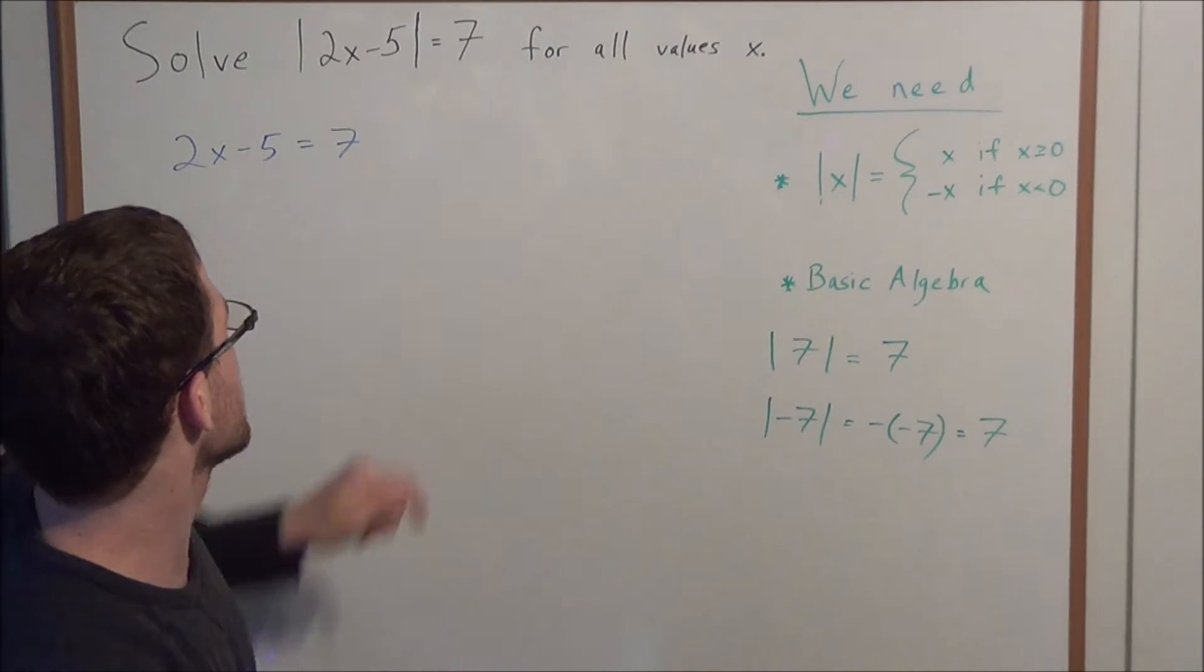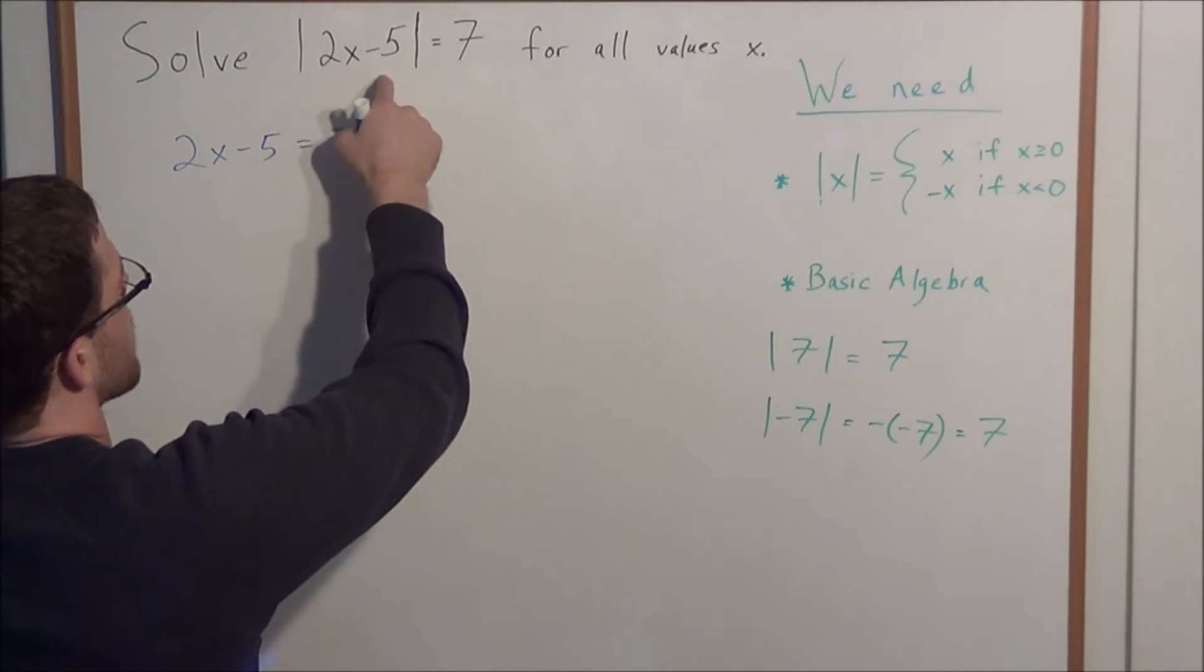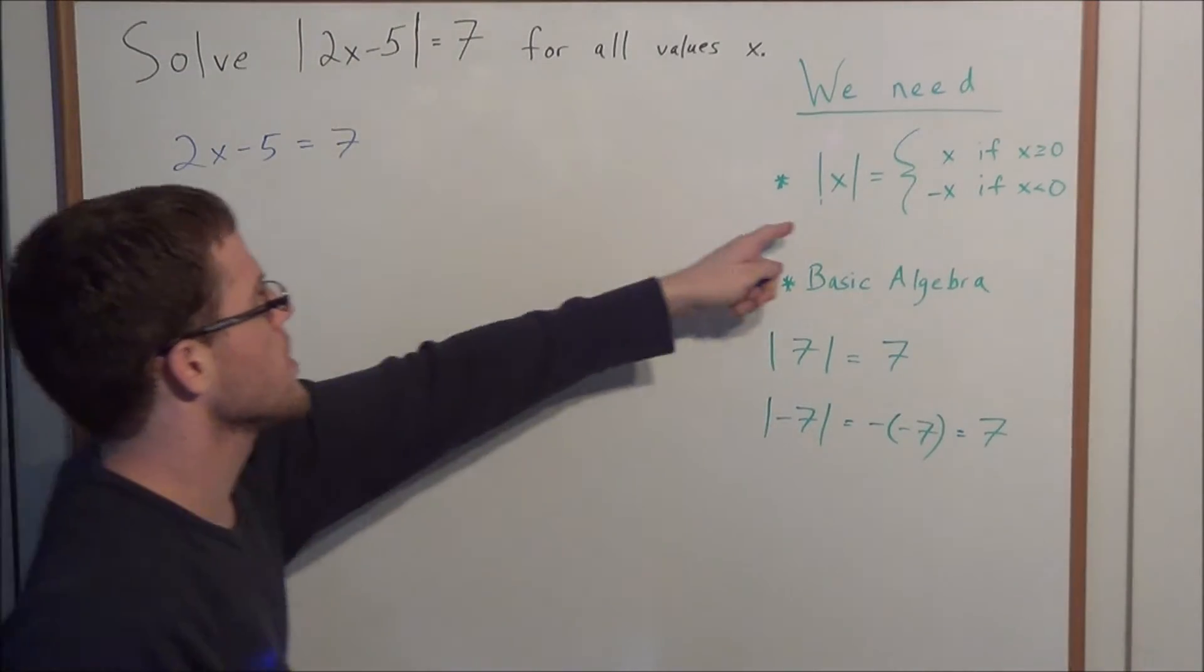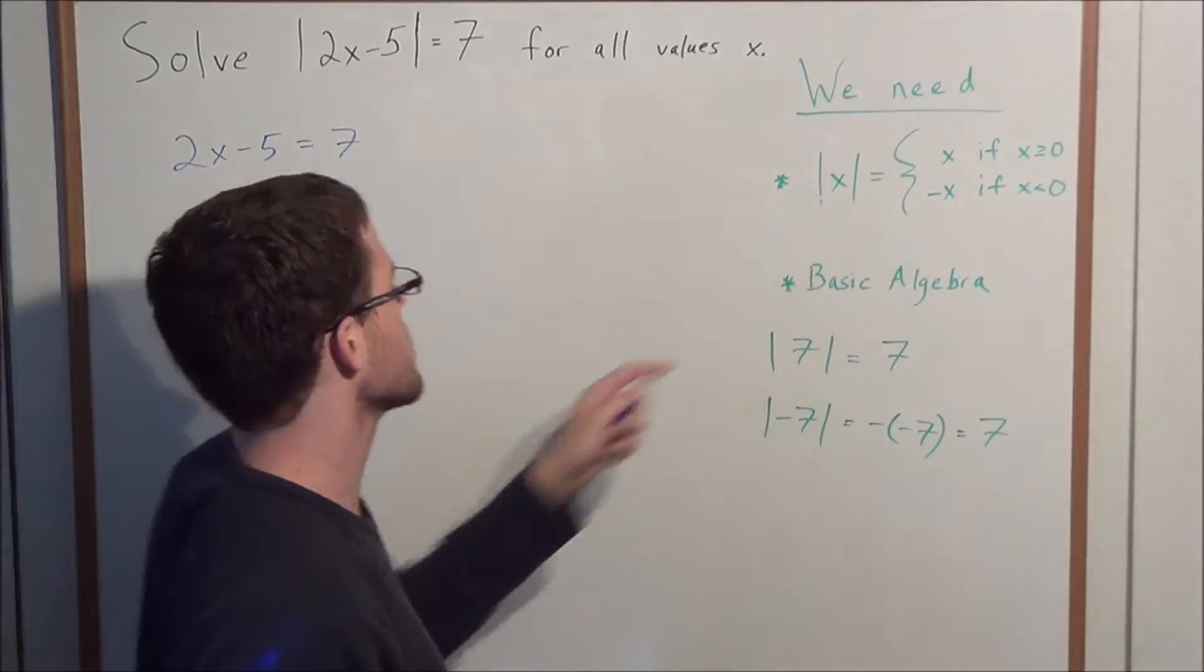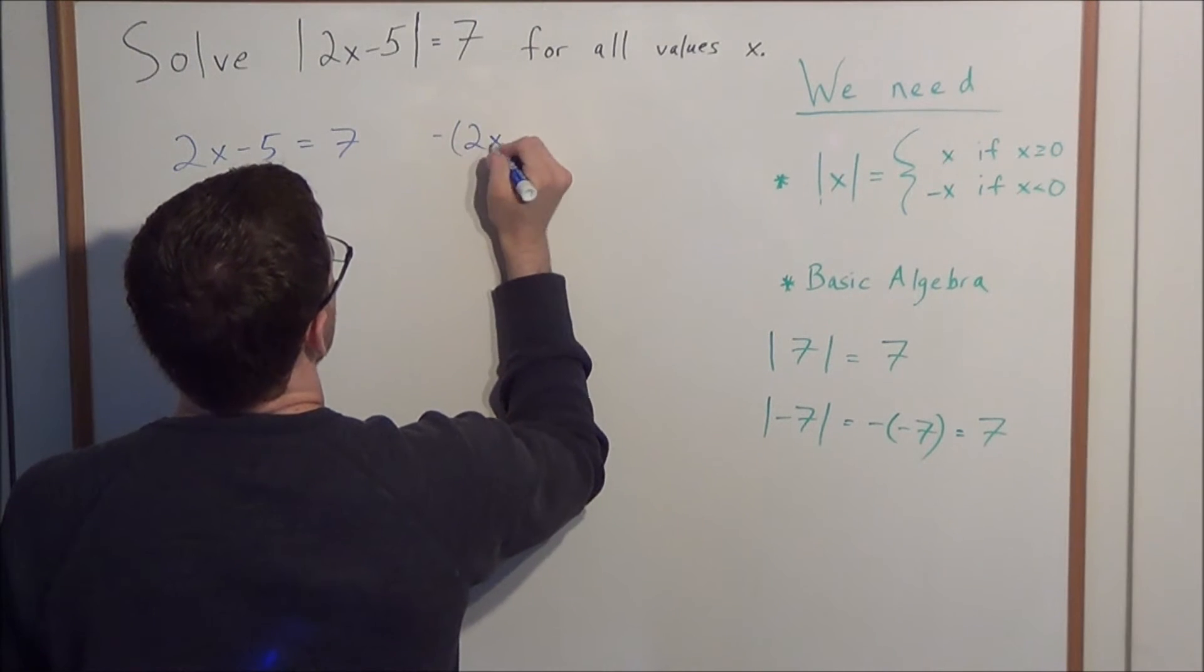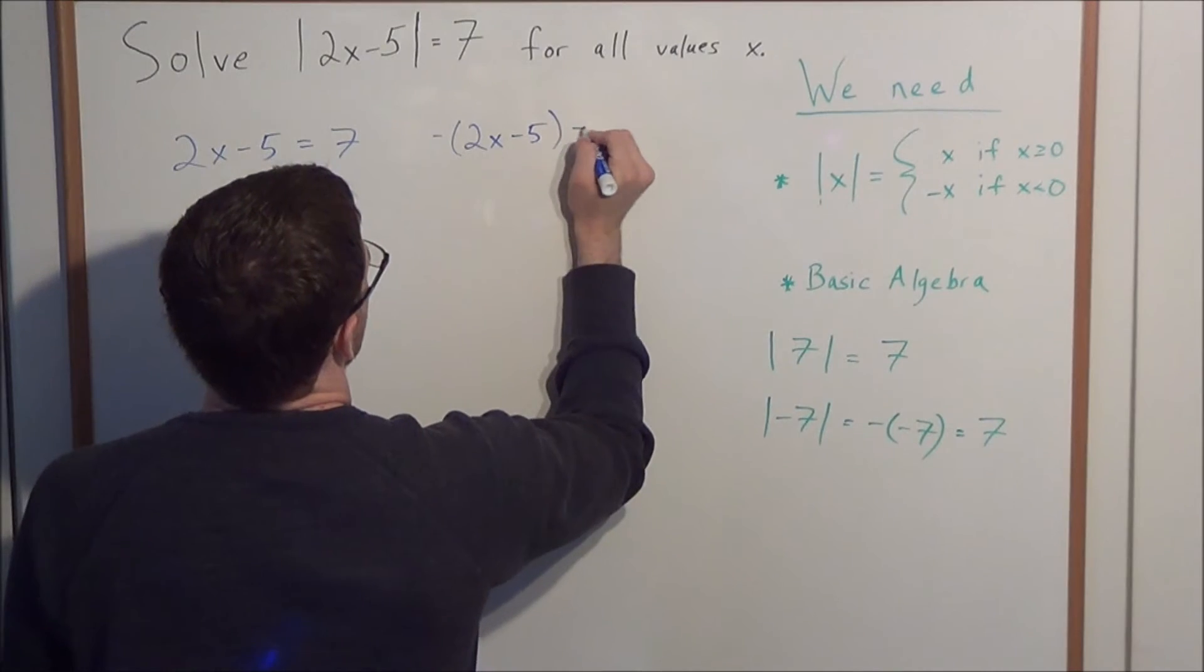Next, we're looking at absolute value of 2x minus 5. Let's say the input is less than 0. Then, in this case, the output would be the negation of the input. So we would have negative (2x minus 5) is equal to positive 7.